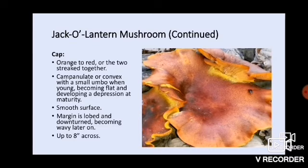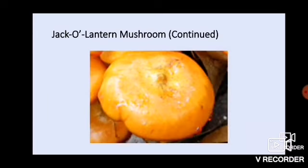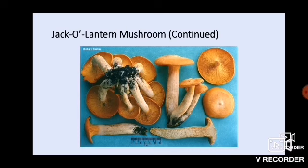If you run your fingers across the surface you'll notice it is smooth to the touch. The margin is lobed and downturned when young, becoming wavy and more upturned later on. This mushroom can grow very large — up to about eight inches across in cap diameter, though usually five or six inches. Here's a photo of a younger mushroom with the margin still downturned and that little tiny umbo at the top, along with a size reference. You can see from this photo just how easily you could mistake one for the other.